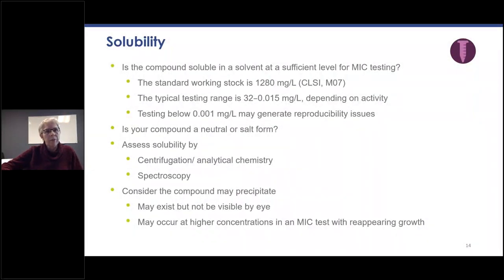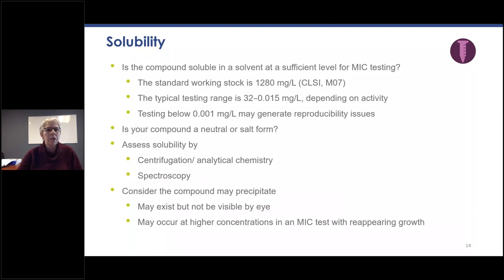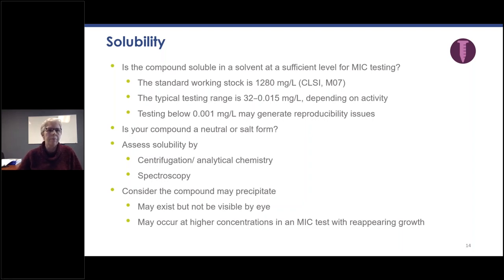The first step is solubility. Is your compound soluble in a solvent at a sufficient level for MIC testing? Standard working stock is 1,280 mg per liter. The typical testing range is 32 to 0.015, depending on the activity of your compound. Testing below 0.001 mg per liter may generate reproducibility issues, and testing above 256 mg per liter may cause precipitation issues. It's also important to understand whether your compound is in neutral or salt form, which affects purity and potency. You can assess solubility by centrifugation, analytical chemistry, or spectroscopy.